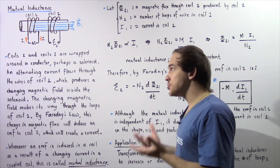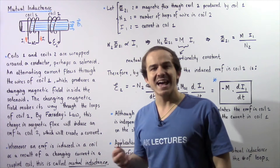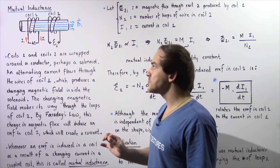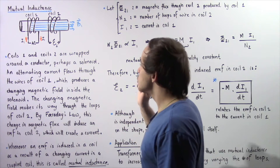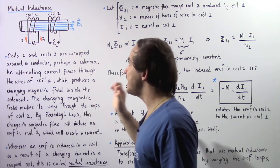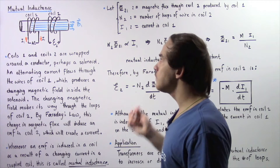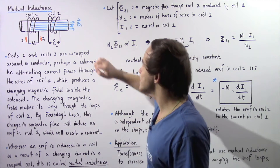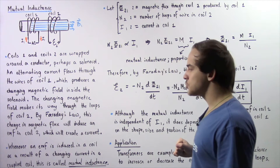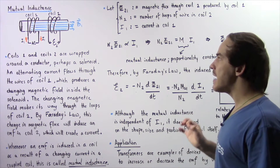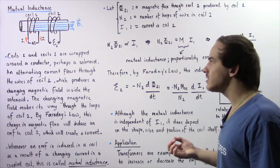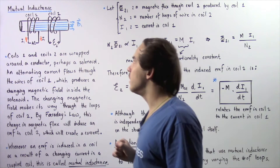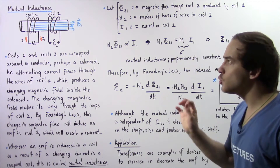Now because our magnetic field is changing, it will create a changing magnetic flux. And by Faraday's law, whenever we have a changing magnetic flux, that will induce an EMF. So an EMF given by E2 will be induced inside the wire of coil number two, and as a result of that induced EMF, an induced electric current will exist within coil number two. Whenever an EMF is induced in a coil as a result of an alternating current in a coupled coil, that is known as mutual inductance.